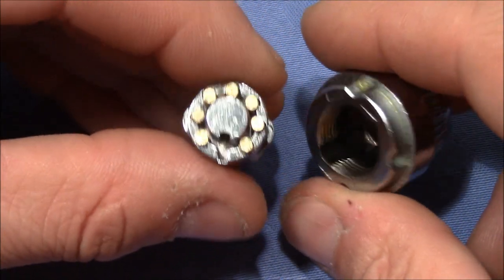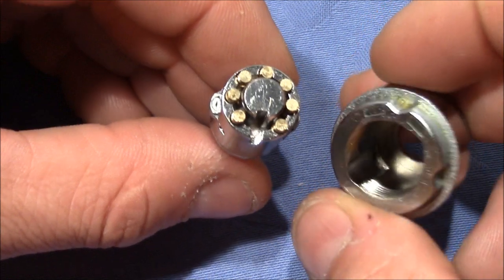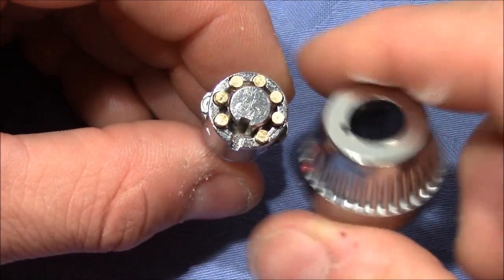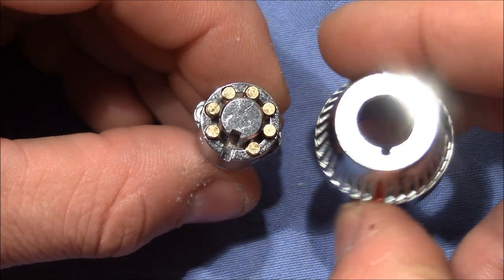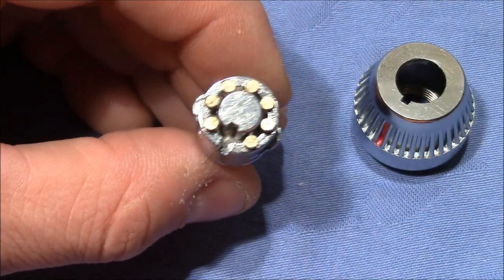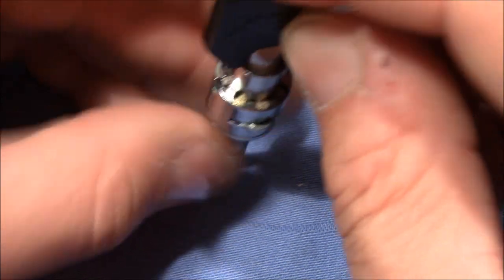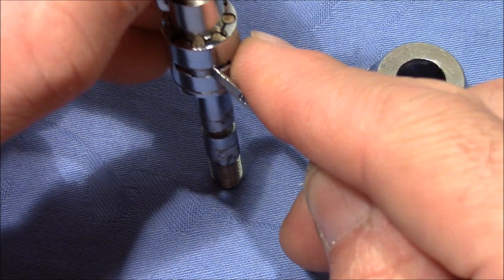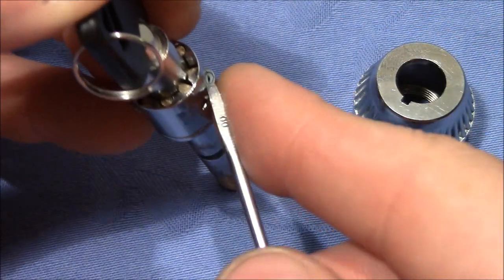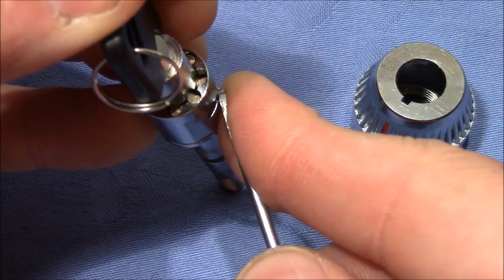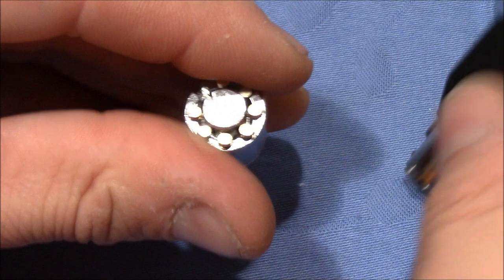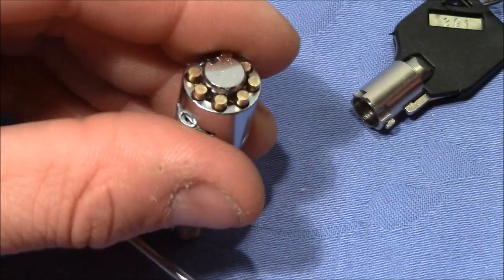That means that at this state with not the correct key inserted, the knob will stay where it is and cannot be turned. But now when we use the right key and push it in, then we can also push in these pieces here and then the knob can turn. So how do these pins look like?